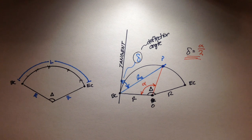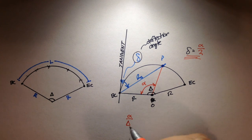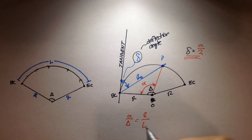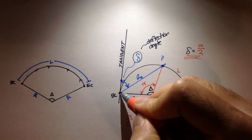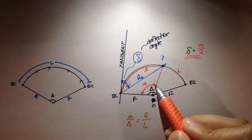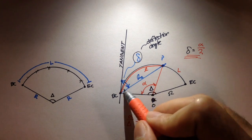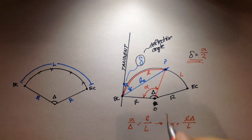There are a couple of equations to derive before we move to an example. The first equation is for angle alpha. Alpha is to capital delta as little l is to big L — where big L is the total length of the curve and little l is the curve length from BC to point P. It's just a ratio, so solving for alpha gives: alpha = little l times delta divided by big L. That's equation one.